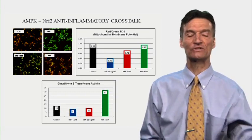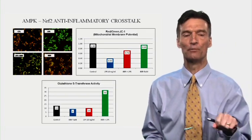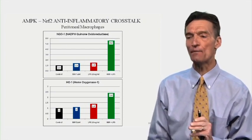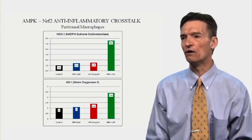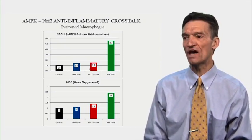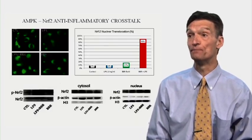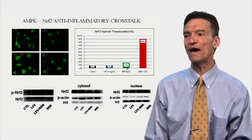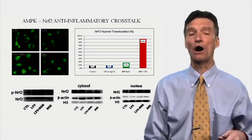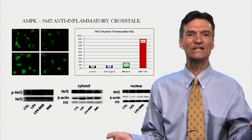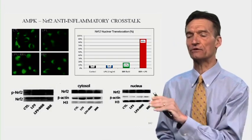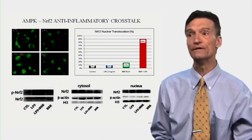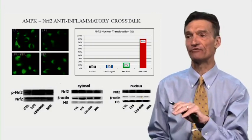LPS will generate some oxidative stress that will release Nrf2 from KEAP1. Berberine via AMPK phosphorylates Nrf2, so we get a synergy. NQO1 and heme oxygenase-1 — work products of Nrf2 — are each affected slightly by berberine or LPS alone, but we see a big synergy with the combination. Nrf2 nuclear translocation rises a little bit with berberine, but it rises a lot with the combination of berberine and lipopolysaccharide. Our antitoxicity defenses are dramatically enhanced with berberine because we're phosphorylating Nrf2, moving it from the cytoplasm into the nucleus to make heme oxygenase-1 and other anti-inflammatory enzyme systems.